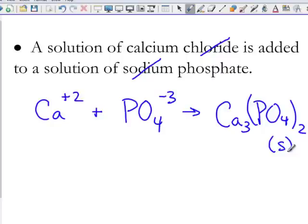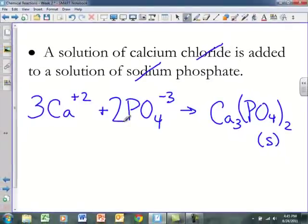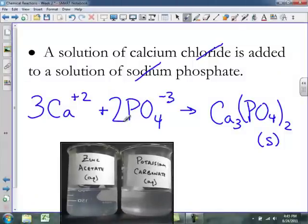Now, we have to go back and balance our atoms and our charges, and so since we have 3 calciums at the end, we need 3 calciums at the beginning. Since we have 2 phosphates at the end, we need 2 phosphates at the beginning, and our charges, therefore, are canceled out. That's our first reaction.